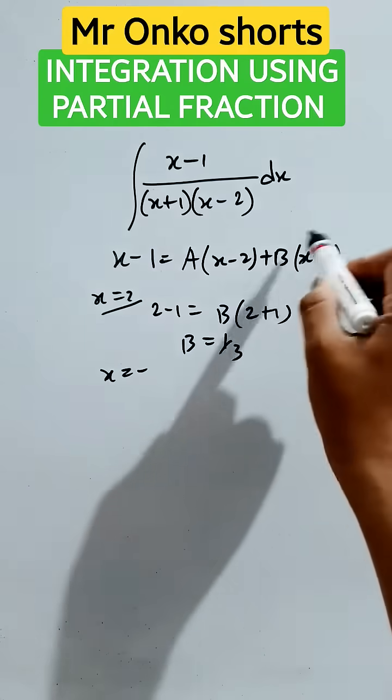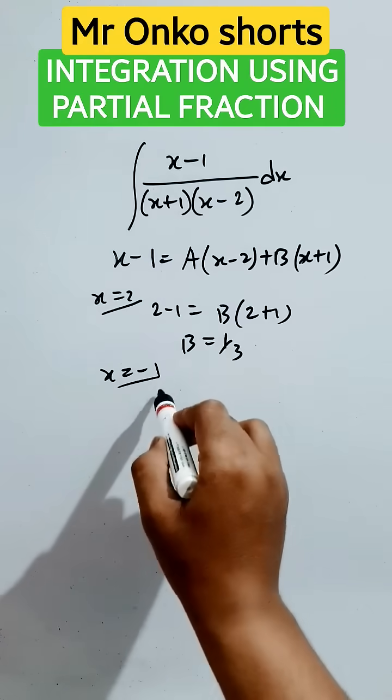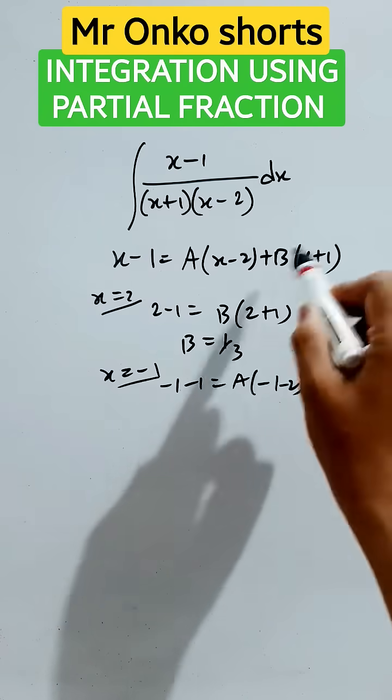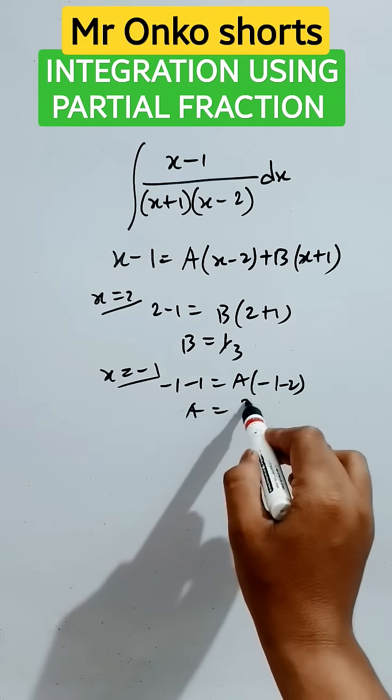Now we will put x equals minus 1. Since x plus 1 is there, so it will be minus 1 minus 1 equals a into minus 1 minus 2 and it will be 0. So a equals 2 by 3.